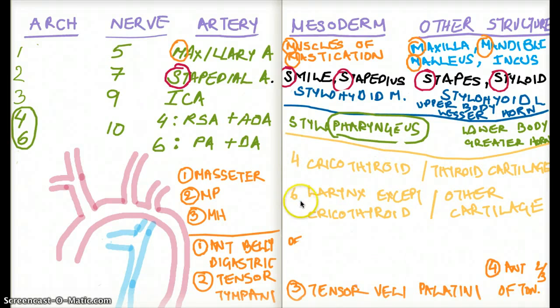And what about 6? Well, 4 comes first. So it will take the more important stuff and leave the rest for brachial arch 6. So what does 6 have? Larynx, except cricothyroid. Why? Well, cricothyroid is already developed from brachial arch 4. And other cartilages also develop from brachial arch 6.